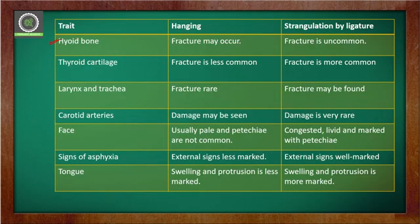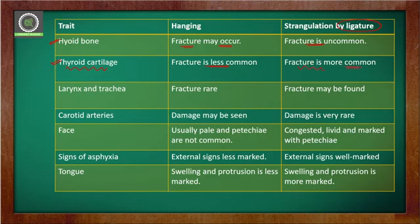Regarding the hyoid bone: in hanging a fracture is visible in the hyoid bone, but in ligature strangulation there is no fracture of the hyoid bone. For the thyroid cartilage, fracture is less common in hanging but more common in ligature strangulation. Regarding the larynx and trachea, fractures are very rare in hanging, but in ligature strangulation fractures may be found near or in the larynx or trachea.